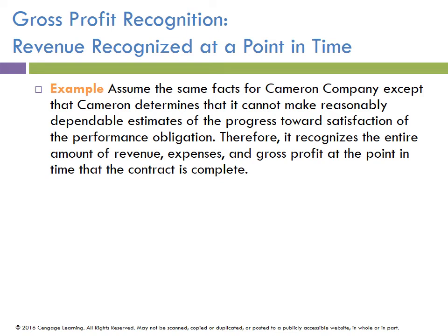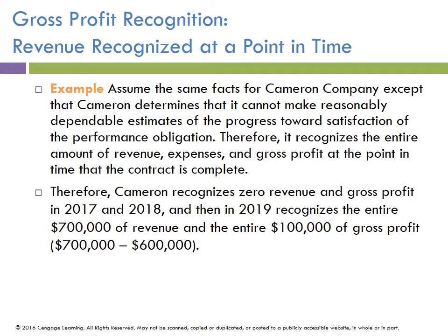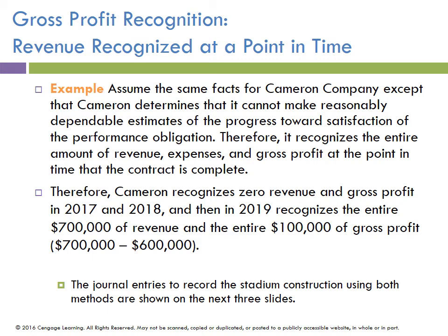Now assume the same facts except Cameron determines it cannot make reasonable, dependable estimates of the progress towards satisfaction of the obligation. Therefore, it recognizes the entire amount of revenue, expenses, and gross profit when the contract is completed. They wouldn't show anything — no gross profit in 2017 or 2018 — they would show all $100,000 in 2019. That could be the situation if you have a problem collecting information to spread out the gross profit over the three-year period.